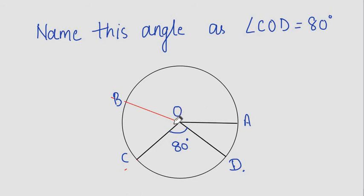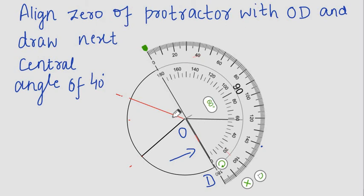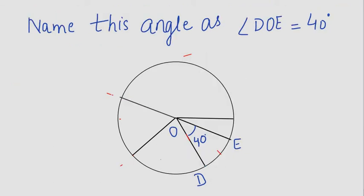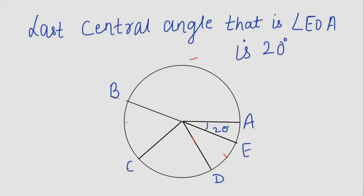Now align the protractor along OD and measure an angle of 40 degrees. The last angle of 20 degrees is left, which we need not make. It will automatically be 20 degrees. Name this angle as angle EOA.